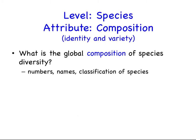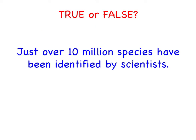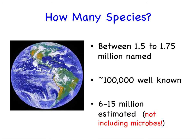First we may consider the whole biosphere — the global composition of species. In this kind of question we're concerned with the numbers of different species, their names, and how we might classify those species. True or false: do you think there are just over 10 million species identified by scientists? Between 1.5 and 1.75 million species have been identified and named, and only about 10% of those — about 100,000 — are fairly well known. But there are estimates between 6 and 15 million species in existence. We're very far from naming all of them.